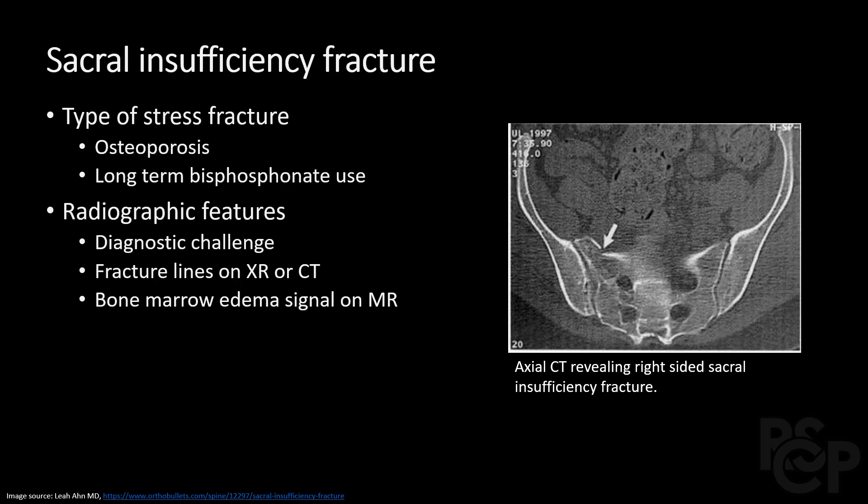Lastly, to be thorough, we included sacral insufficiency fractures. These are a type of stress fracture due to a long history of osteoporosis or bisphosphonate use. They pose a diagnostic challenge as you really have to look closely to find them, and sometimes they do not even show up on CT. In these patients, acute fractures may be found on MRI due to the high bone marrow edema signal. Thank you all for listening.